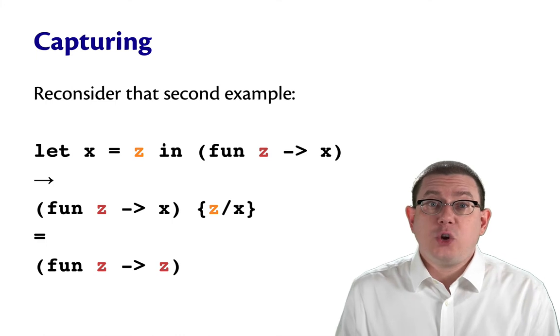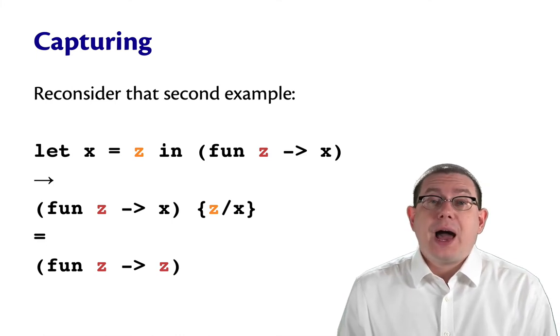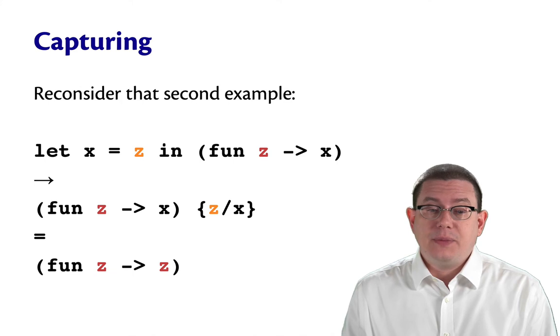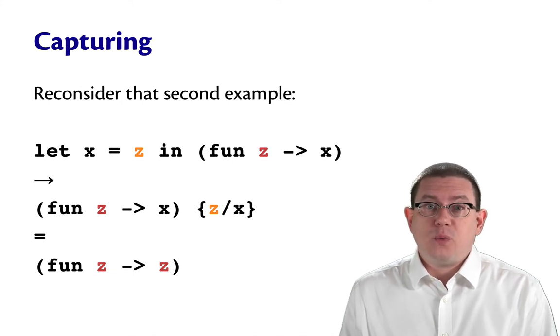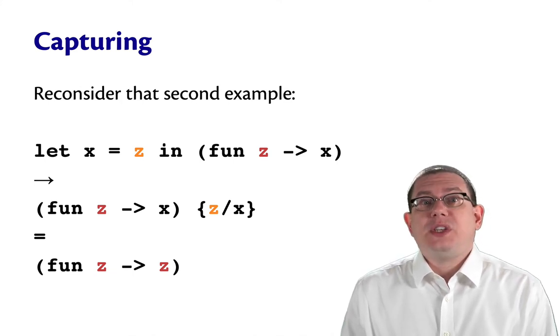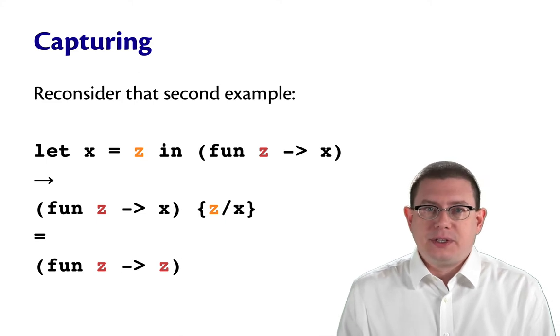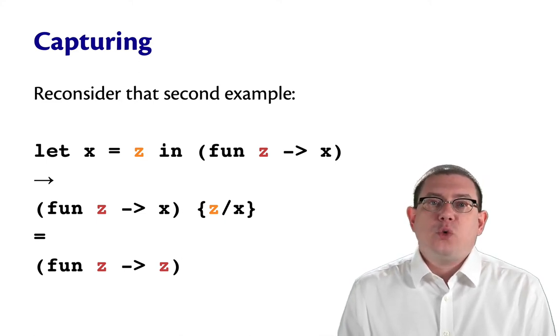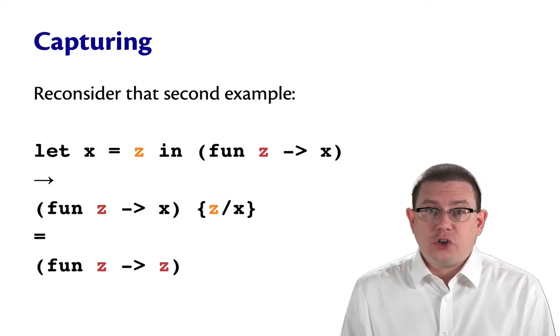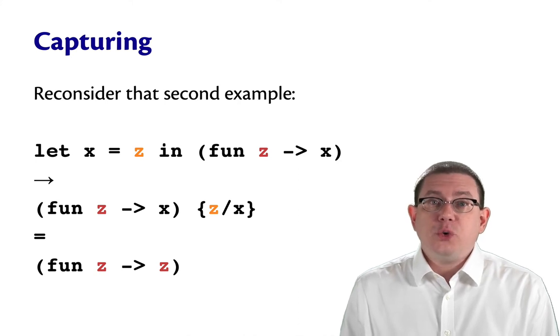So let's take a closer look at that second example. I've color coded the variable name here, z, to indicate the difference between where it's being bound. The orange z was bound somewhere outside of this scope. We're not showing it here. The red z is being bound by the function. When we do the substitution,